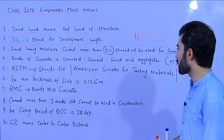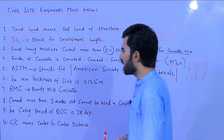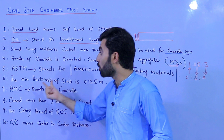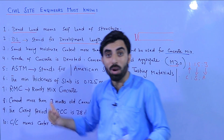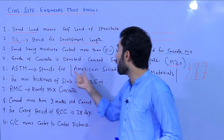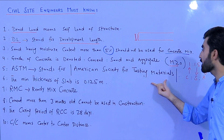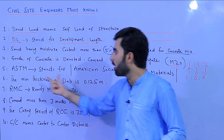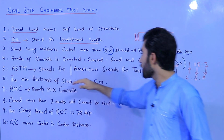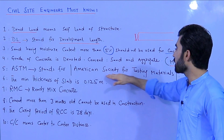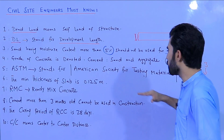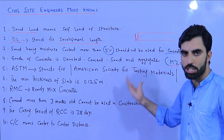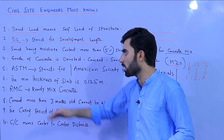The fifth point: ASTM is an important reference. ASTM stands for American Society for Testing and Materials. You can get more information from ASTM about testing materials, their strength, and related specifications. It is a widely recognized organization that provides standards for construction and building materials.